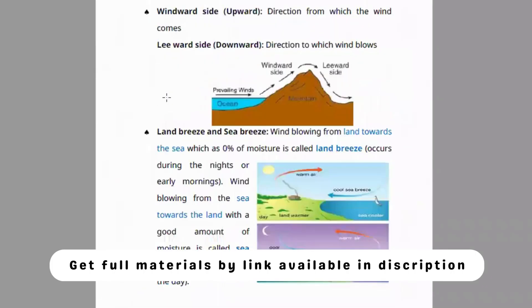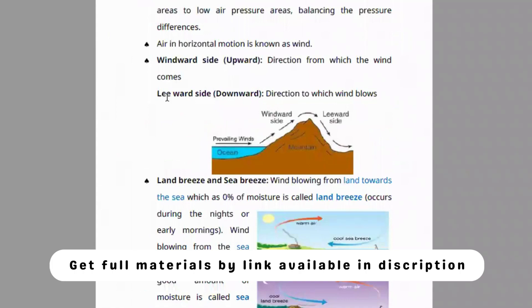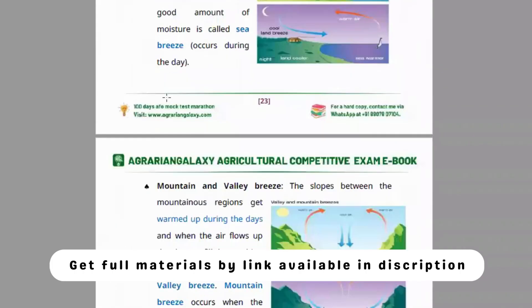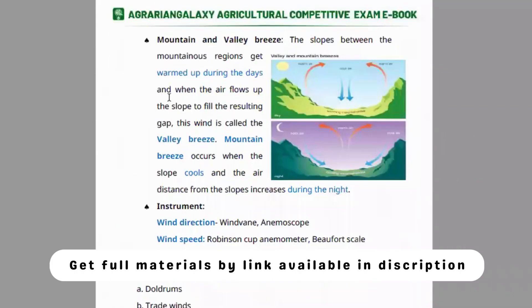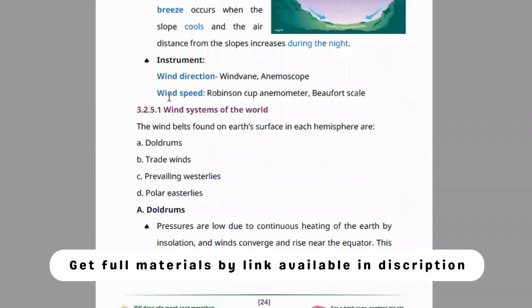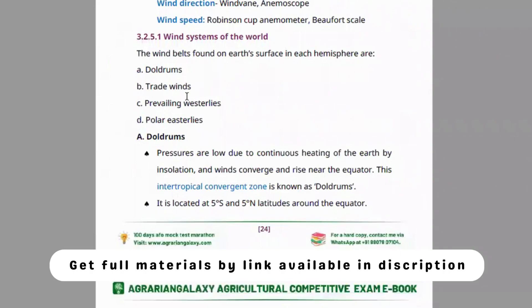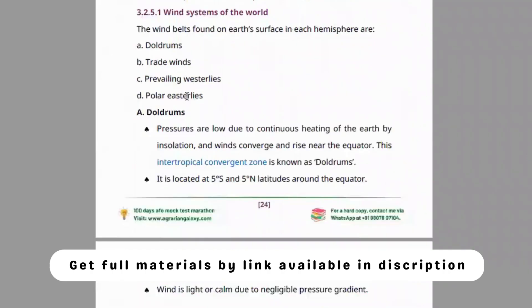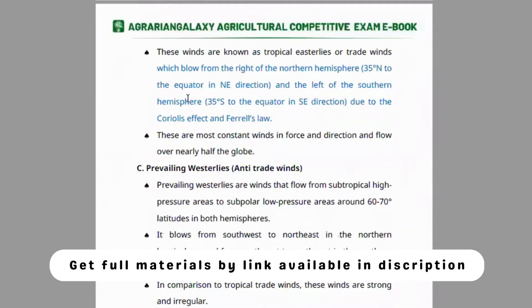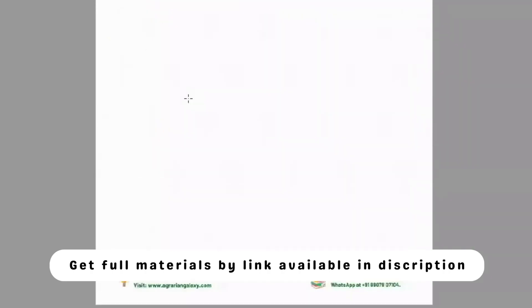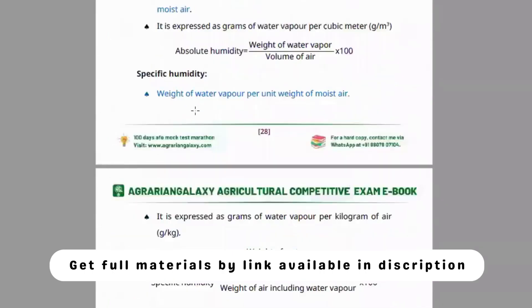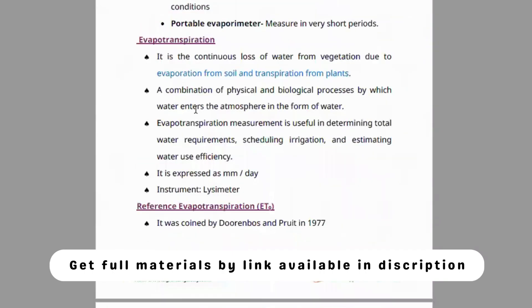The next element is wind — what is the windward side, land breeze, sea breeze, mountain and valley breeze, and the instruments used for measuring wind direction. Wind systems are also covered, including old terms like trade winds, prevailing westerlies, and polar easterlies, all explained with clear pictures.